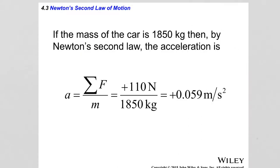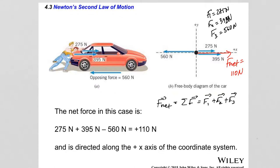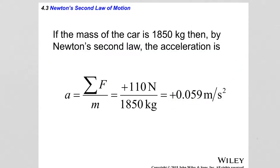Now that I know the net force, I can calculate the acceleration of the car. If the mass of the car is 1850 kg, then from the second law, acceleration equals net force divided by mass: 110 N ÷ 1850 kg = +0.059 m/s². The positive sign confirms what the second law stated — the acceleration is in the same direction as the net force, both in the positive x direction.